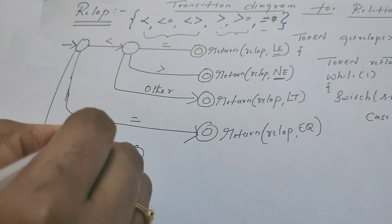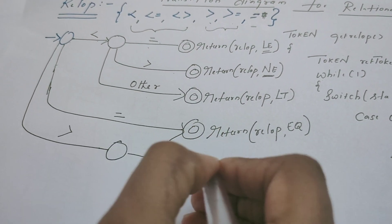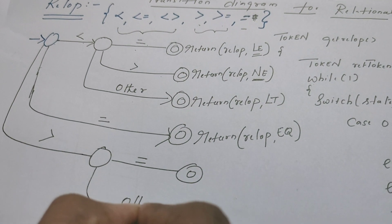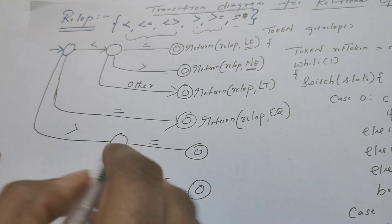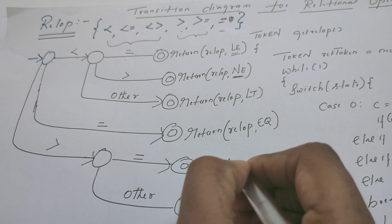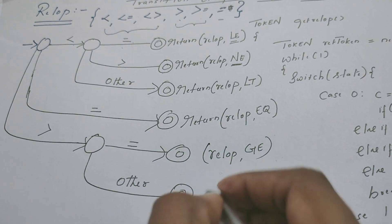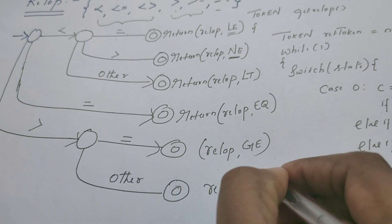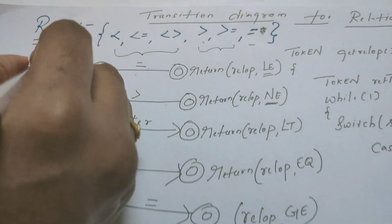These two remaining operators can be drawn similarly. From the start state, if it reads the greater than symbol, this can be followed further by an equal to symbol or by some other symbol. In the first case it returns a token relational operator with value greater than or equal to, and in the second case it returns a token with value greater than. This completes the transition diagram for relational operators. Let us number the states.